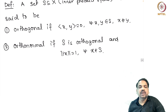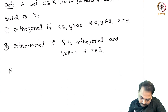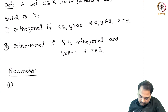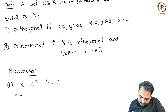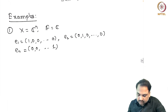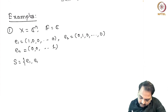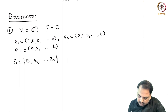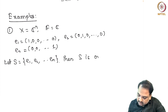Let us see a few examples. Let X be ℂⁿ over the field ℂ. Take e1 = (1, 0, 0, …, 0), e2 = (0, 1, 0, …, 0), and in general, ek has 1 in the kth place and 0 elsewhere. If we take S = {e1, e2, …, en}, then S is orthonormal.